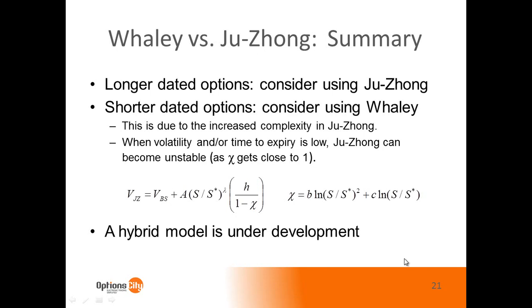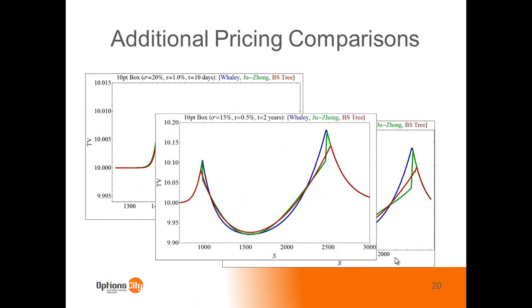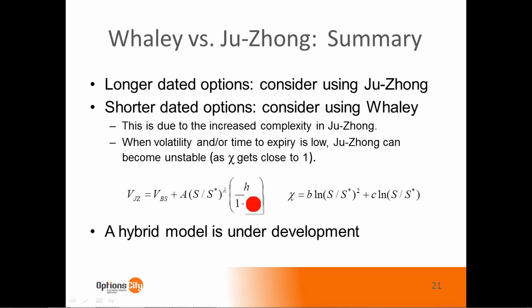Getting back to the waviness in the Xu Zhong model: if you look at the formula, chi can get close to one in short-dated, low-vol situations, which causes the additional correction term to become very large rather than incrementally small. So there can be a point where the Xu Zhong model is unstable. One of our recommendations — something we're actually developing — is a hybrid model that switches from Whaley for short-dated pricing to Xu Zhong for longer-dated pricing.